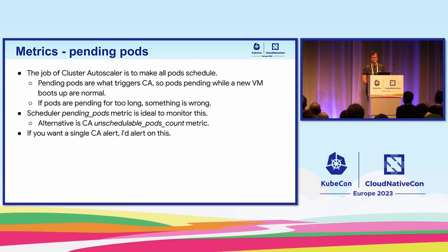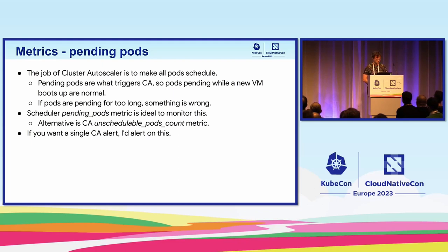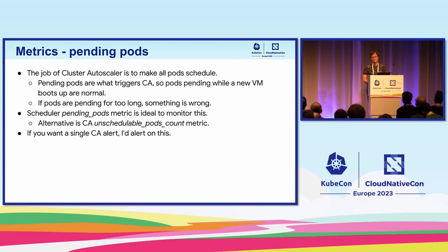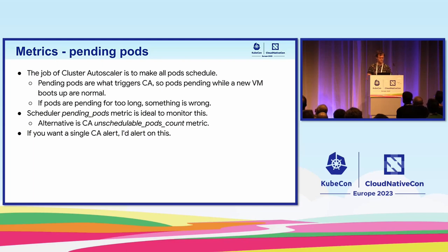It doesn't necessarily mean the problem is in Autoscaler itself, but it means it's not achieving its task, and Autoscaler is a good place to start debugging. There's a very convenient metric for this: Kubernetes scheduler has a pending pod metric that is ideal here. Cluster Autoscaler has its own metric that gives you essentially the same number, but I prefer using the metric from the scheduler component — because if there's a problem with Autoscaler, you'll still have the metric coming from the scheduler.